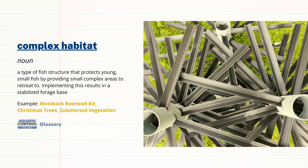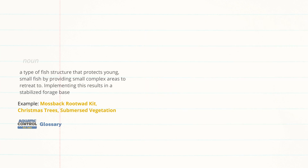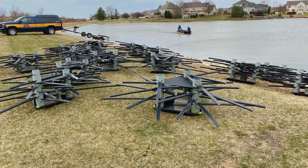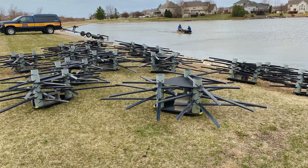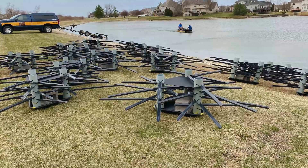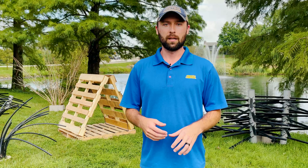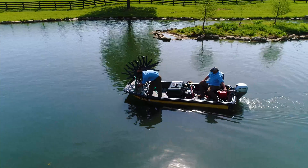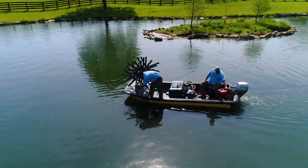Now we're going to talk about complex habitat. This is going to be great for protecting the young of year or small fish in the pond. This can actually help change the trajectory of your fishery. By increasing complex habitat, you can allow more bluegill to avoid being eaten as they grow into larger sizes, and this is going to be extremely important in a bass-crowded scenario as we're trying to rebound your forage base.